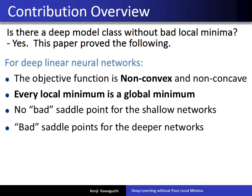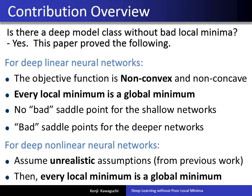This paper also proved some interesting properties of saddle points. For shallow networks, there is no bad saddle point, whereas for deep networks, there are bad saddle points. On the other hand, for deep non-linear networks, this paper assumed unrealistic assumptions that were used in previous papers. Under those assumptions, this paper proved that every local minimum is a global minimum.